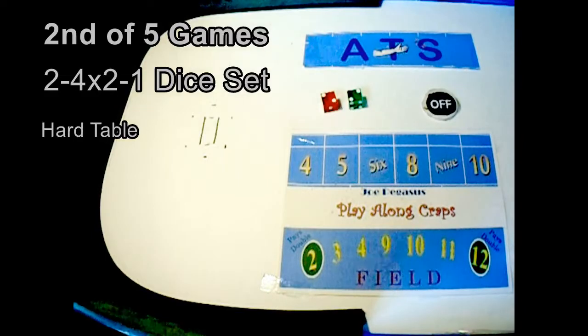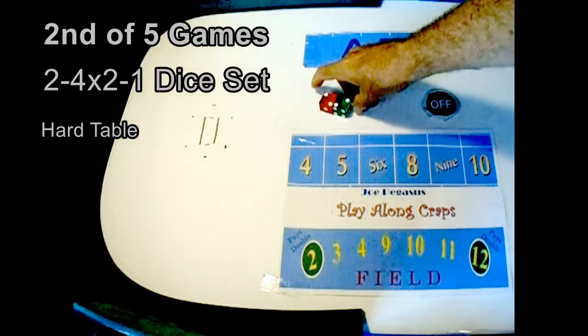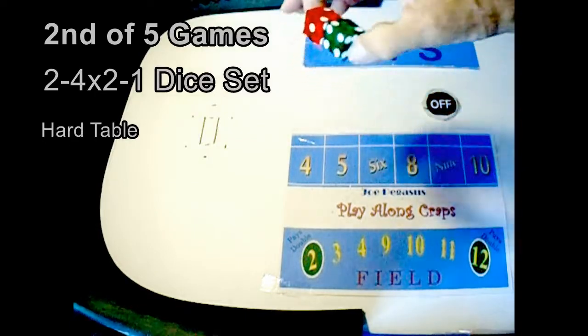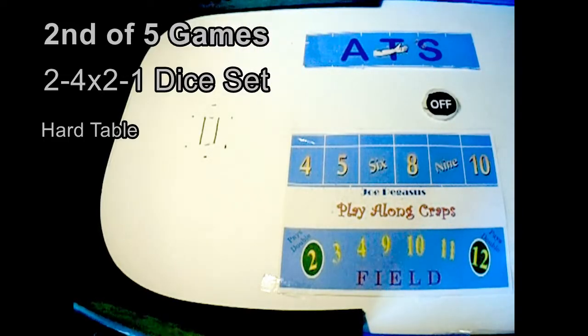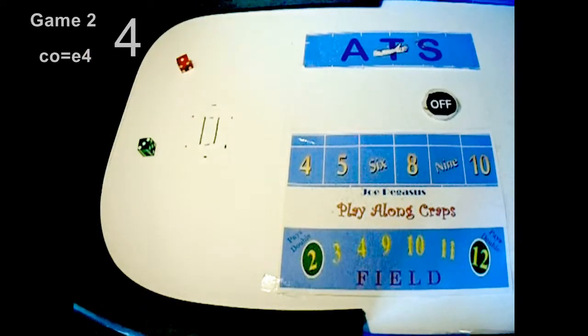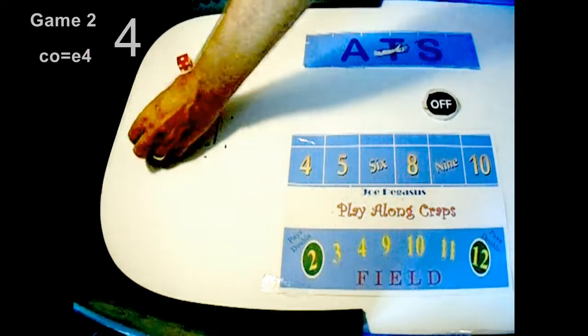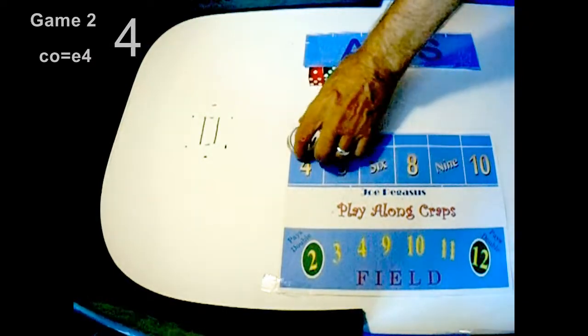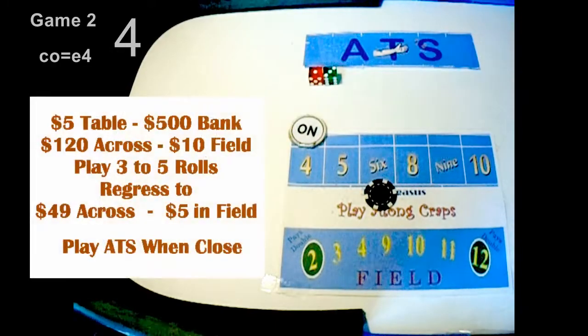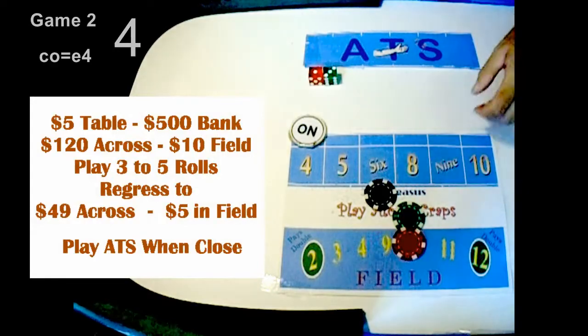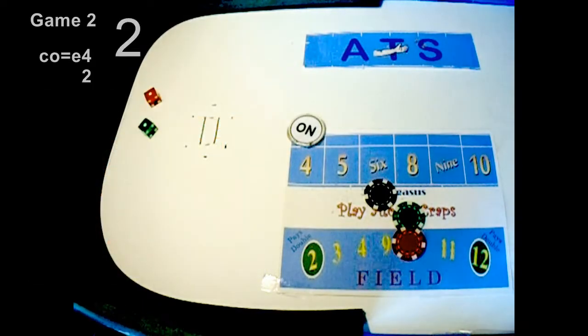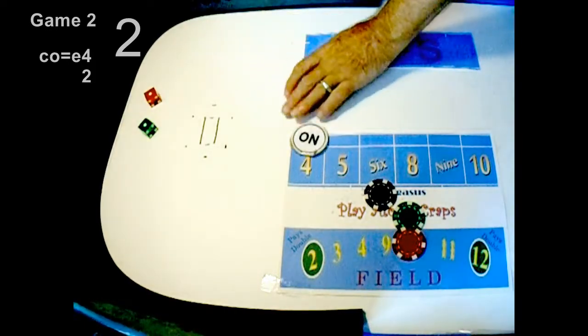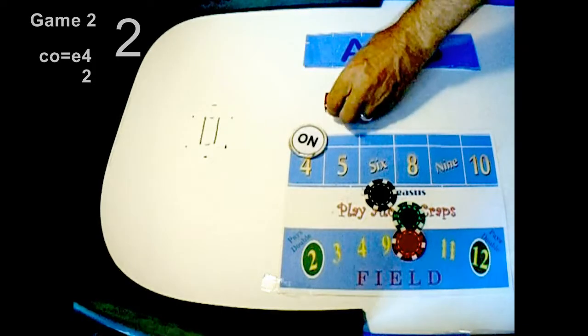Game two of the two four two one dice set on a hard table. So far it's like the two four two five dice set, which is just okay, but okay means you're not losing money. Come out is easy four. 120 across, 10 in the field. Come out is easy four, yes it hit.